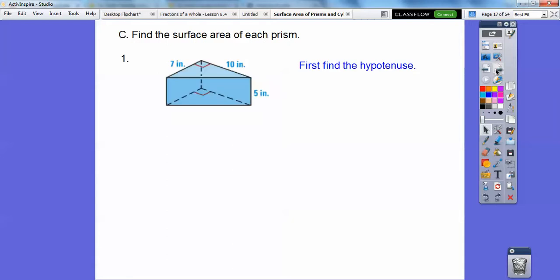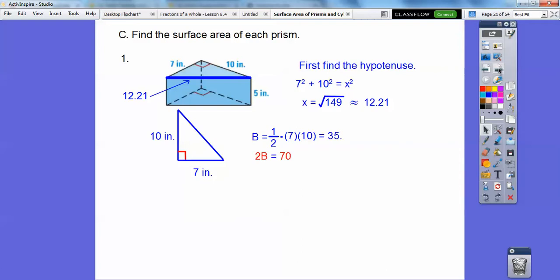So find the surface area of each prism. Here we have a right triangular prism. Let's find the hypotenuse first. So that would be our first thing because we've got to find the perimeter, 2B plus Ph. So a squared plus b squared equals c squared. So 7 squared plus 10 squared equals x squared. We get square root of 149. So that hypotenuse is about 12.21. Let's find the area of the base. So the base is 35. So two of those is 70.